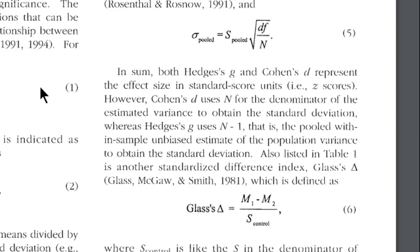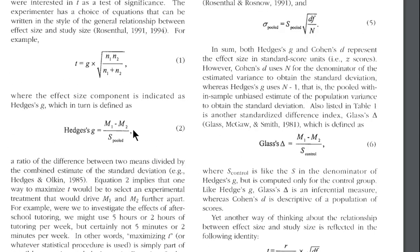So I recommend that you report your effect size estimate of the difference between two means in standardized form as Hedges' g because you probably only have access to the sample standard deviations.